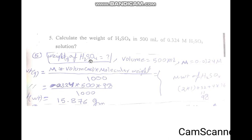This is for molarity, this is for volume, and this is for molecular weight. H2SO4 will be calculated like this. We will calculate directly using the calculator — the weight in grams will be 15.876 grams.